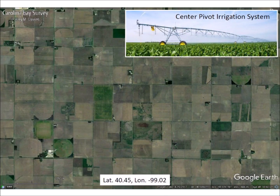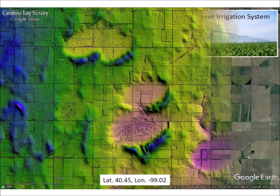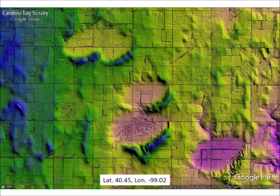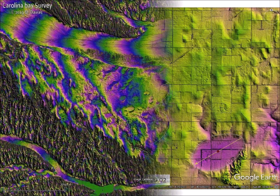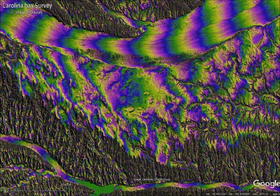A satellite view of the Nebraska landscape shows only square farms and circles made by center pivot irrigation systems. A LiDAR image of the same area shows the square shapes of the fields, but it also reveals the elliptical shapes of Nebraska Rainwater Basins. The field survey by Michael Davias identifies the location of the basins, their size, their shape, and their orientation. LiDAR images provide visualization of the surface of the Earth that makes it possible to consider new ideas about the mechanisms that form the Carolina Bays and the Nebraska Rainwater Basins.